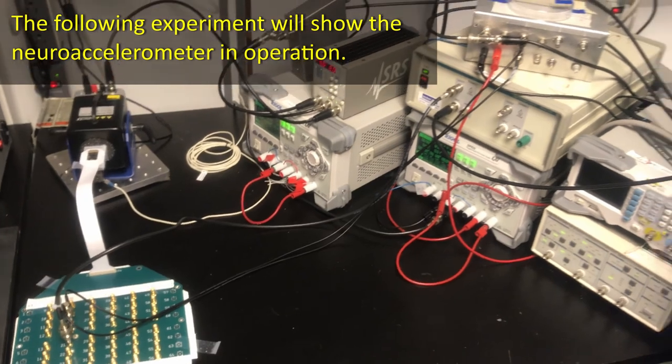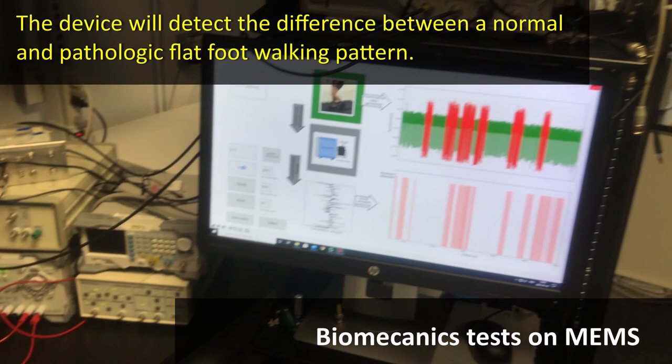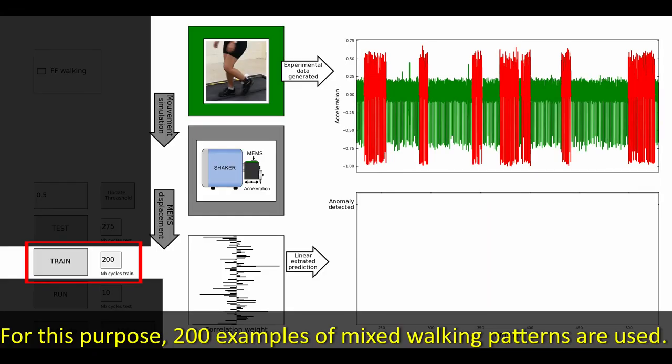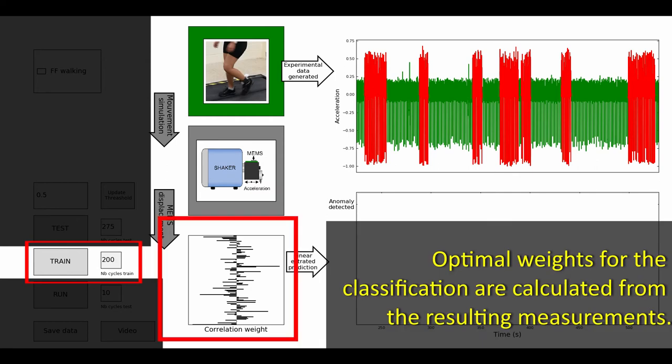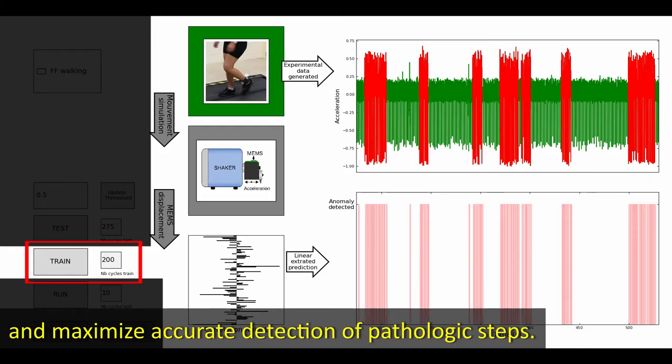The following experiment will show the neuroaccelerometer in operation. The device will detect the difference between a normal and a pathologic flat-foot walking pattern. Since it is a neuroaccelerometer, the device first needs to be trained. For this purpose, 200 examples of mixed walking patterns are used. Optimal weights for the classification are calculated from the resulting measurements. A decision threshold is chosen to allow classification and maximize accurate detection of pathologic steps.